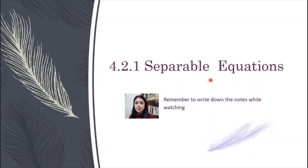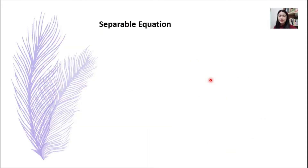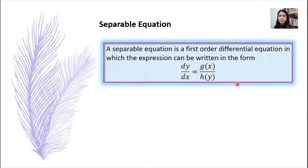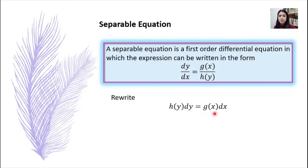Here is section 4.2.1 on separable equations. A separable equation is a first order differential equation that can be written in a specific form. When you have a separable equation, you can rewrite it by placing the function that has only variable y with dy, and the function that has only variable x with dx.